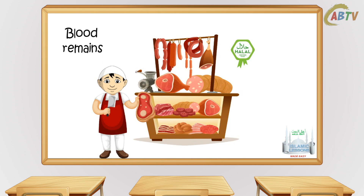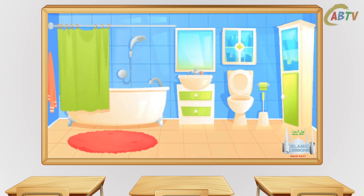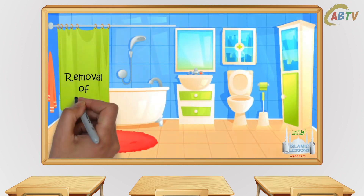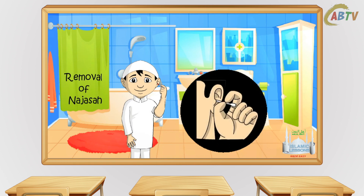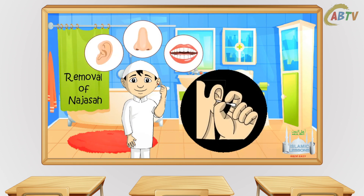Note: this does not mean you can consume the blood — it just means it is tahir. If the inner parts of your nose, ears or mouth become najis, they become tahir once the najasa goes away and there is no need to wash them with water, as long as the blood does not come out. This is only specific for those areas of the body.